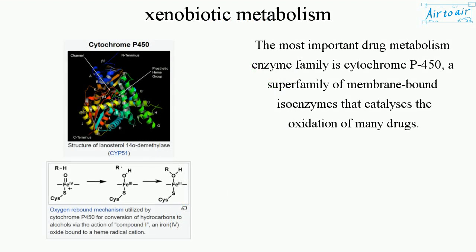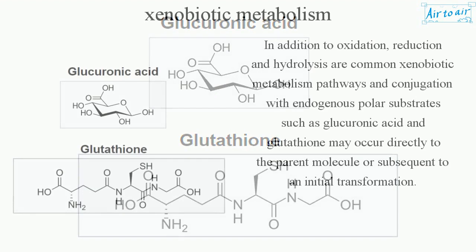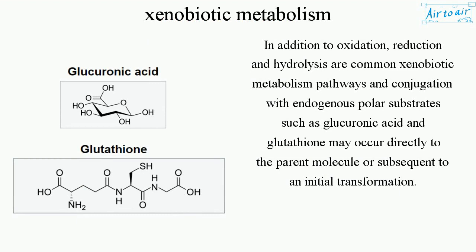The most important drug metabolism enzyme family is cytochrome P450, a superfamily of membrane-bound enzymes that catalyses the oxidation of many drugs. In addition to oxidation, reduction and hydrolysis are common xenobiotic metabolism pathways. Conjugation with endogenous polar substrates such as glucuronic acid and glutathione may occur directly to the parent molecule or subsequent to an initial transformation.